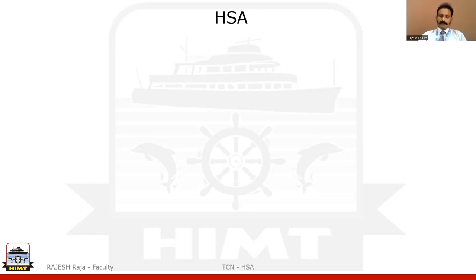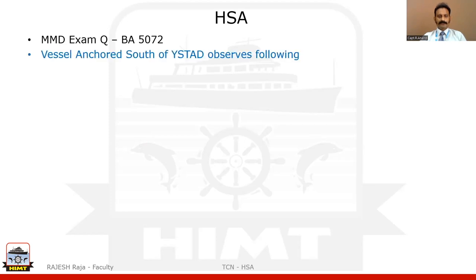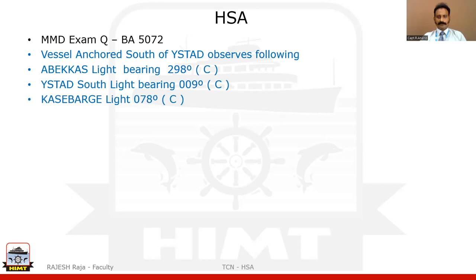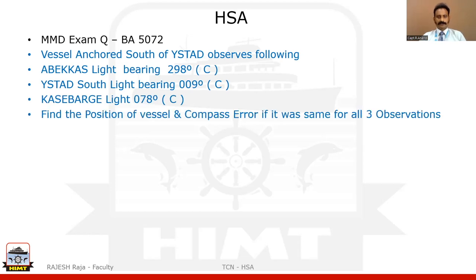I'm going to take a question for second mates, based on chart number BA5072. I have given just a brief of the question. It says the vessel was anchored south of Weistad and the following observations were made: three lights with compass bearings. The question asks to find the position of the vessel and the compass error, given all three observations were taken at the same time.